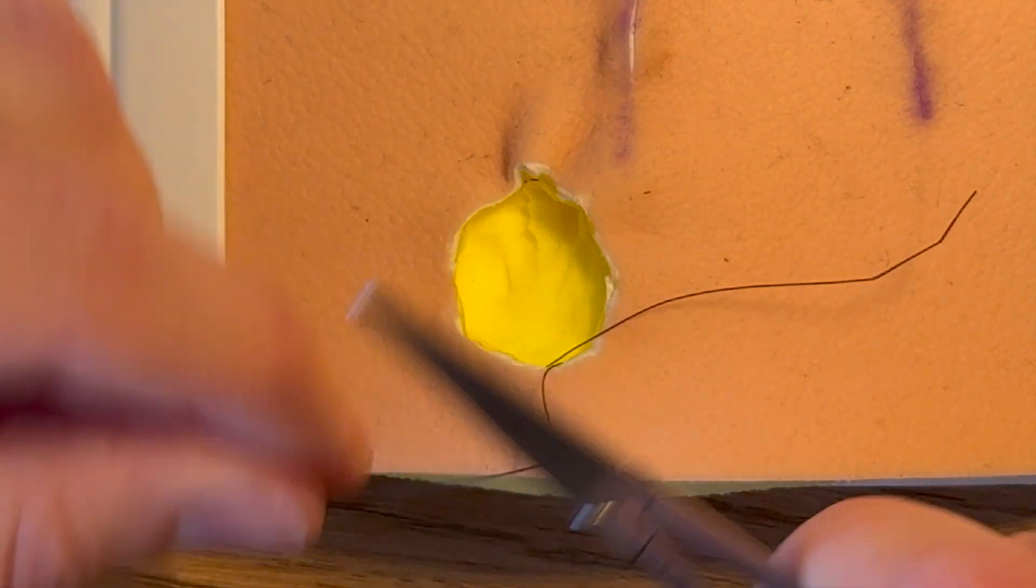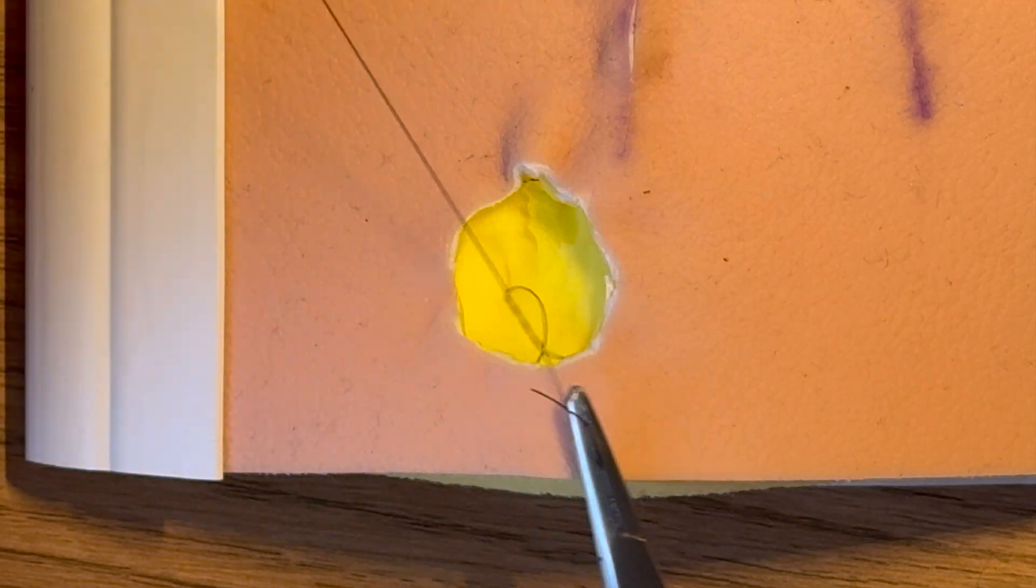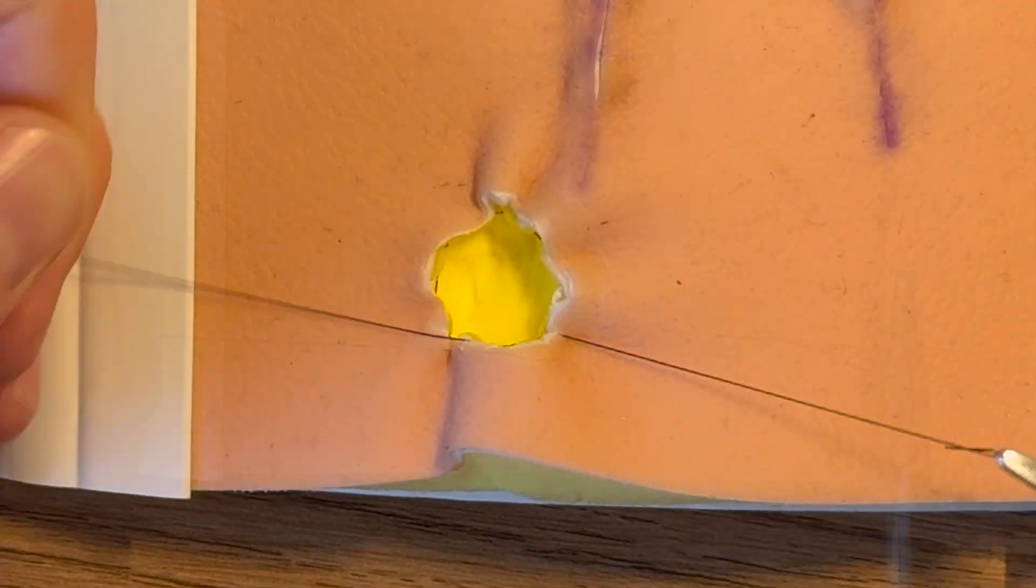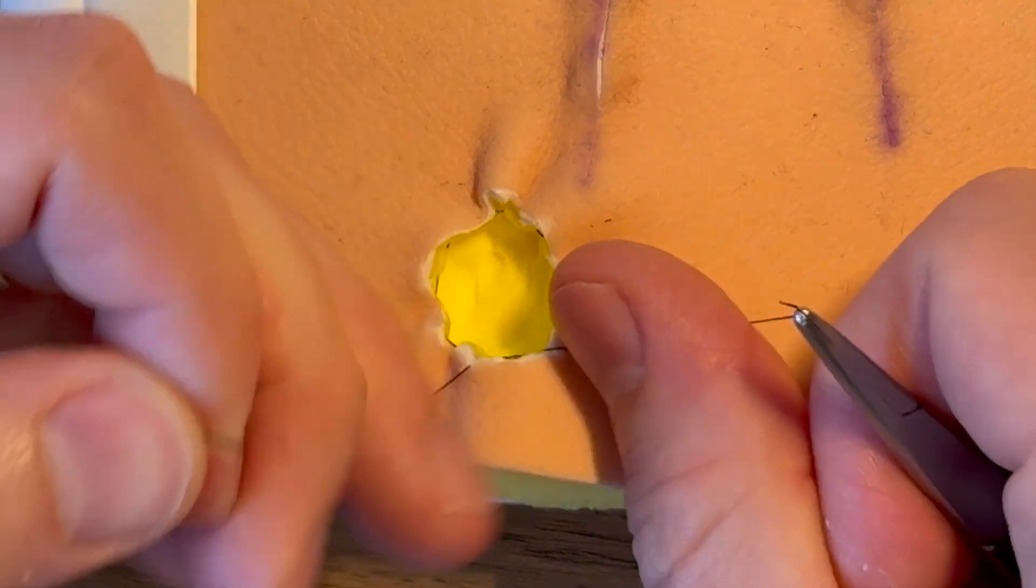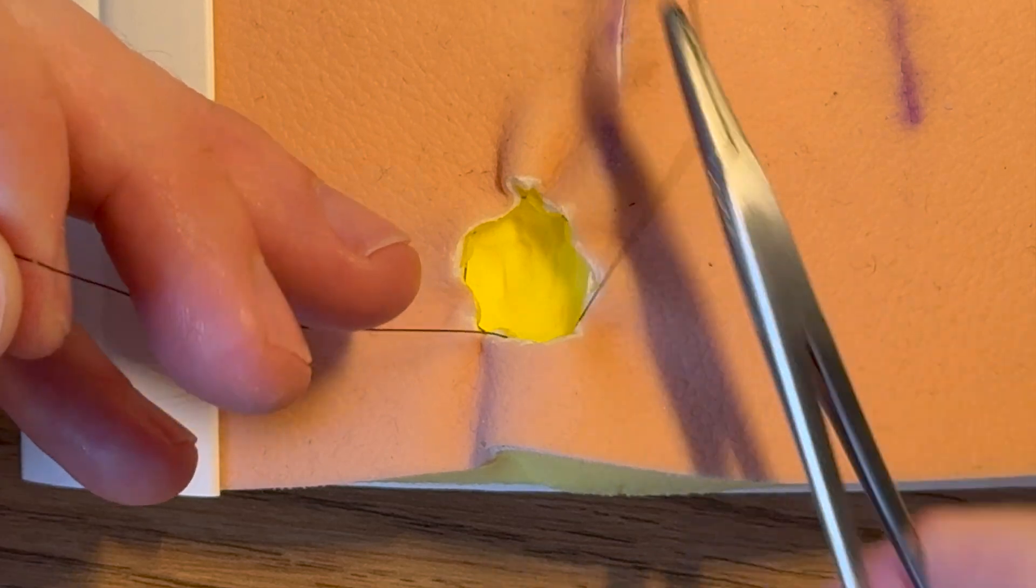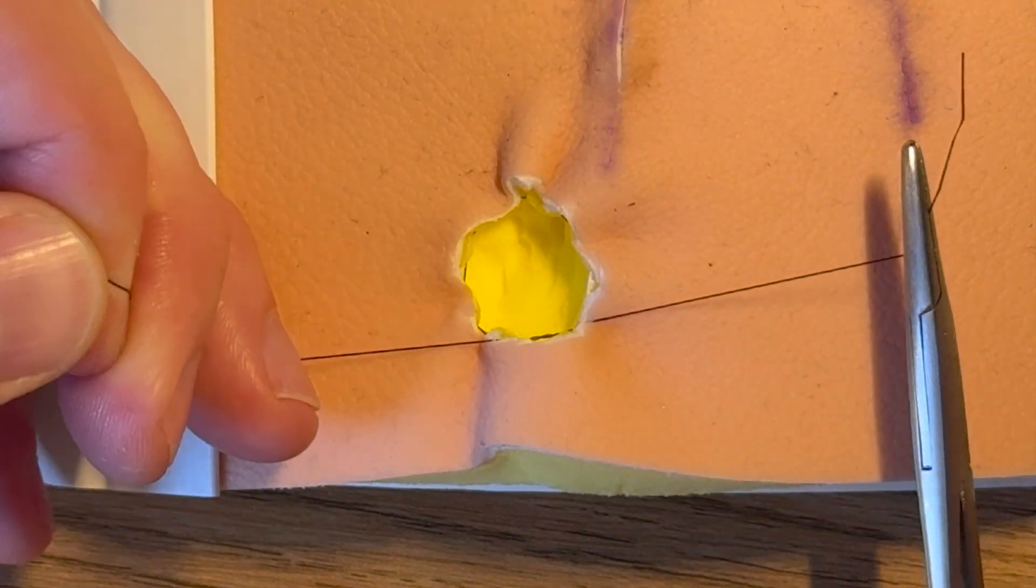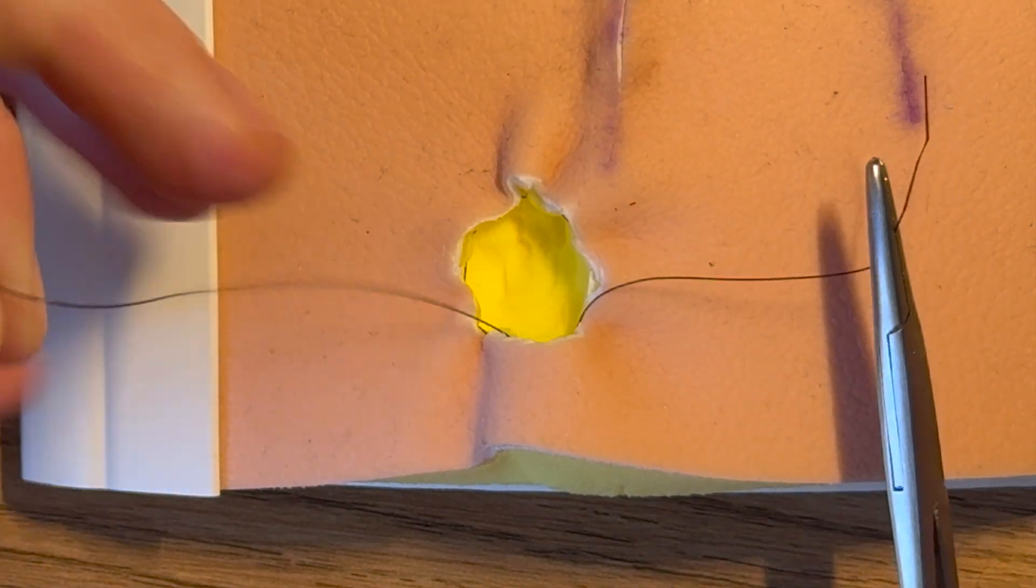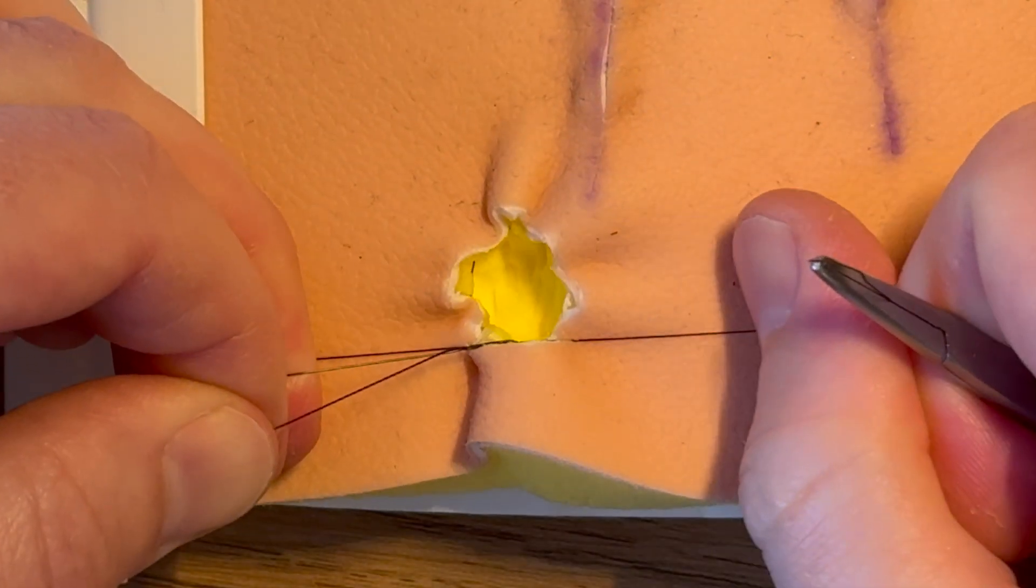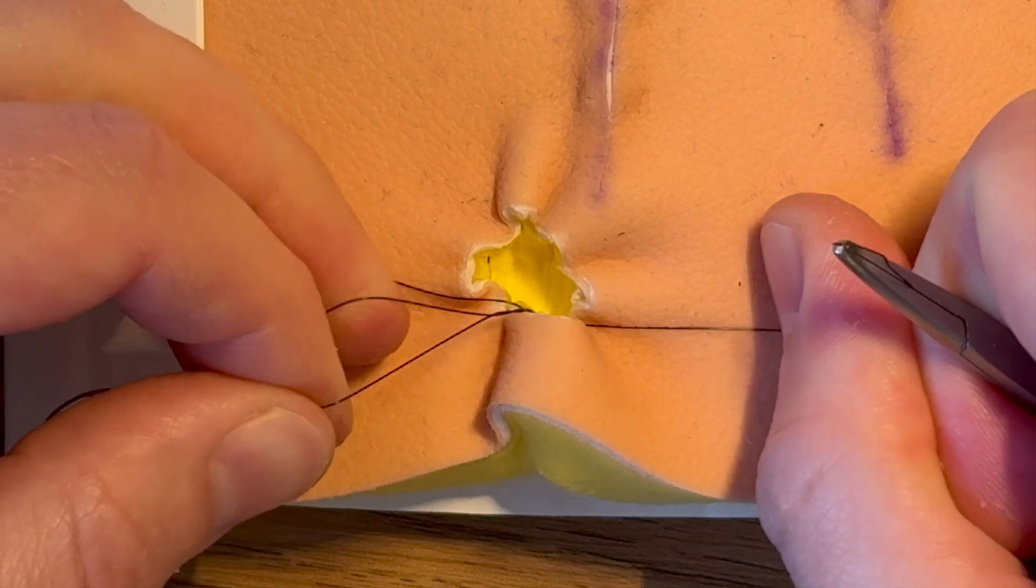And then we need to do our first two throws of our surgeon's knot as we would with anything. Bring that down. At that point you're either going to need an assistant to help you hold it or you're going to need to use some form of tightening slipping knot which I'll cover in another video.